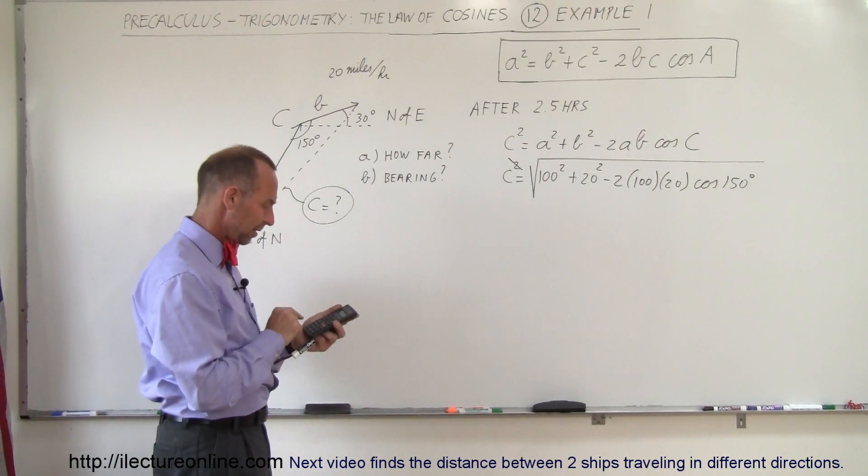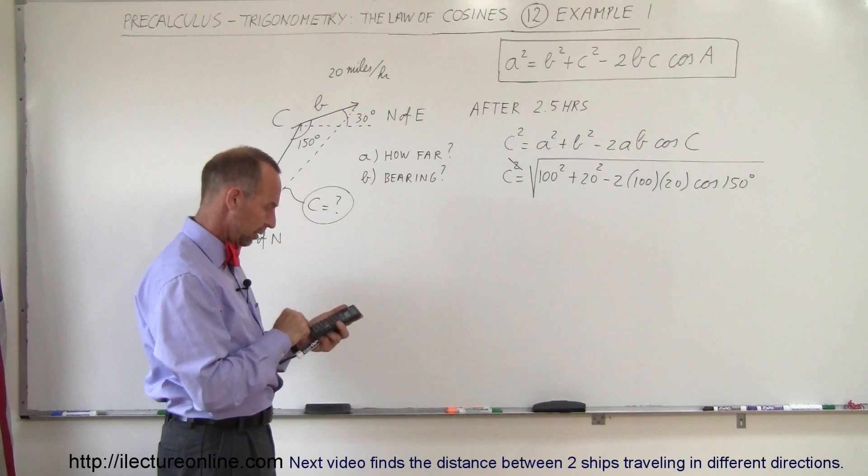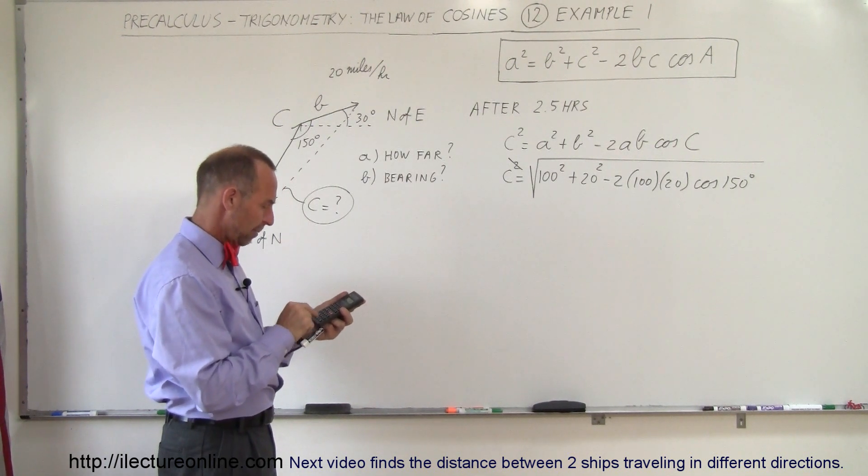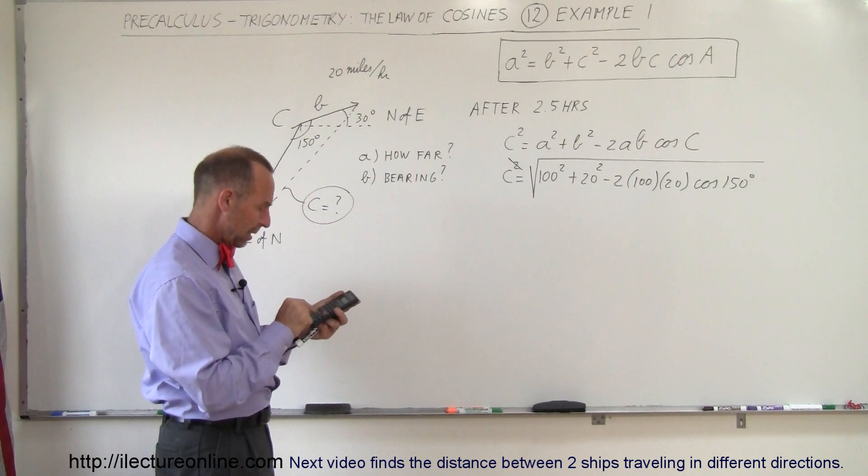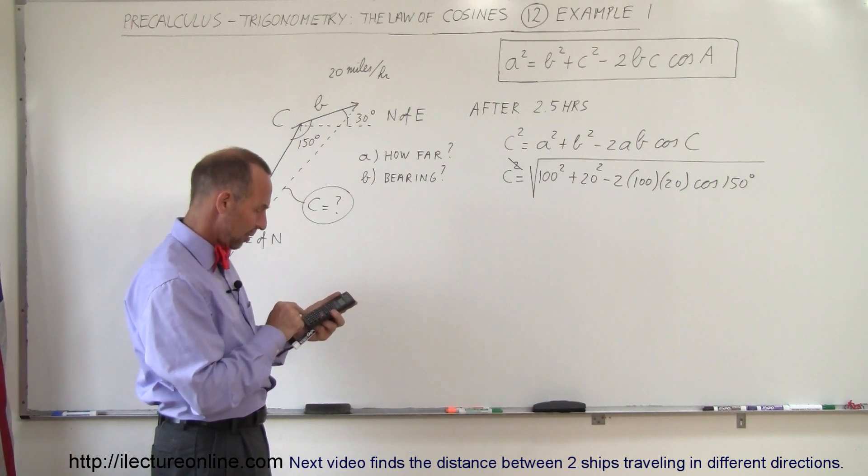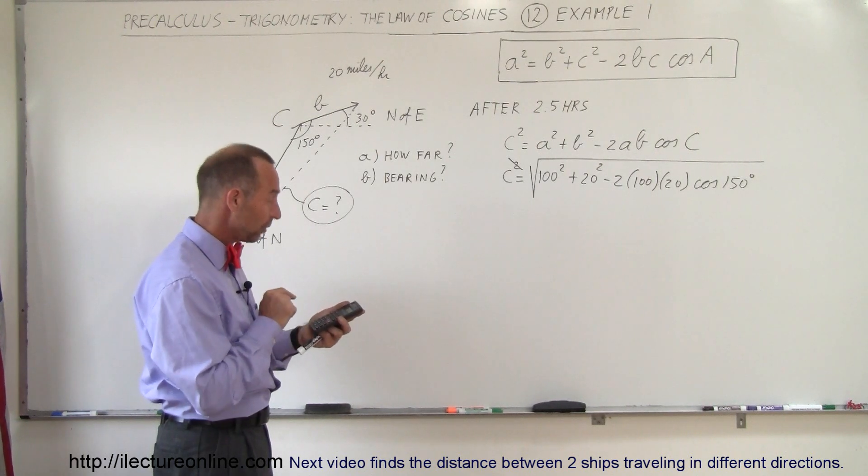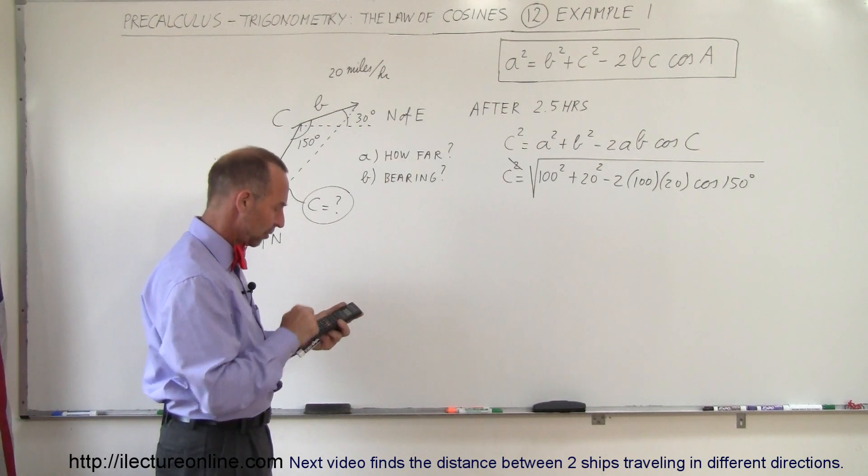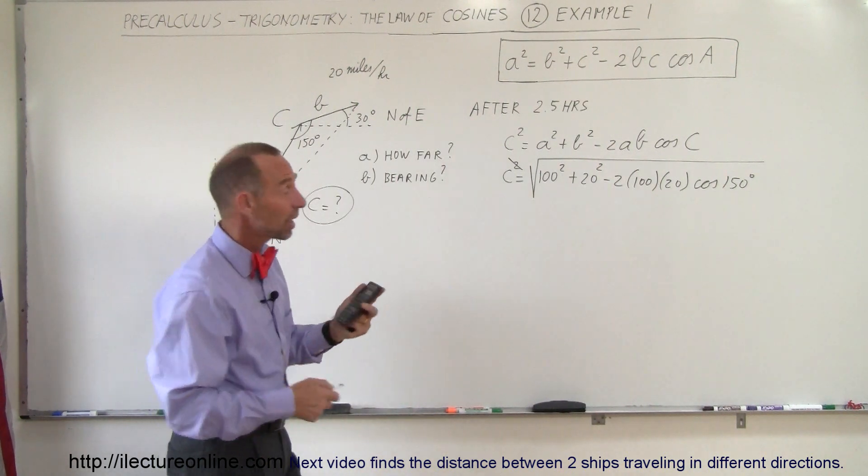So we have 10,000 plus 400 minus the quantity 2 times 100 times 20 times the cosine of 150, close parentheses, equals, and then take the square root. And we end up with 117.75, okay?